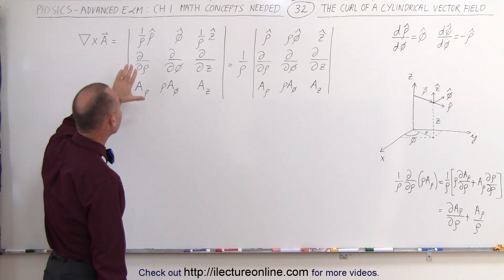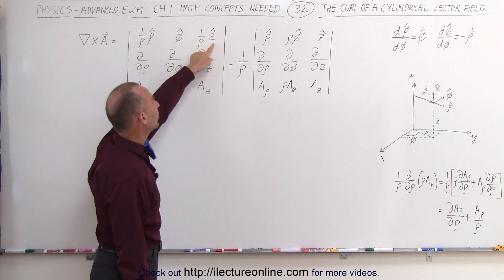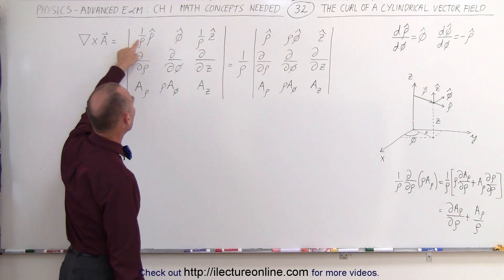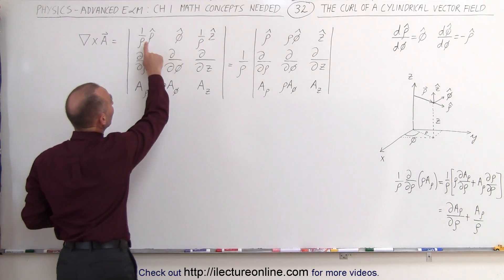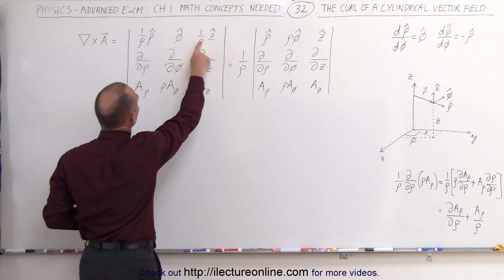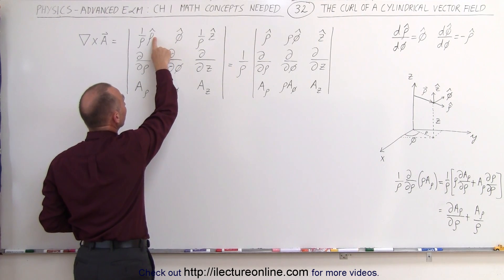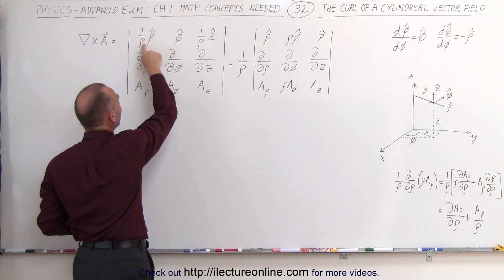The curl of a vector in cylindrical coordinates can be written like this. Now notice that it almost looks the same as Cartesian coordinate systems. We have the row, the phi, and the z unit vector, but we have a 1 over row and a 1 over row component there. The reason why we do that is we want to make sure that the units here are all the same. Notice that this has units of meters or length, and if we divide it by 1 over row, it has a non-unit component.